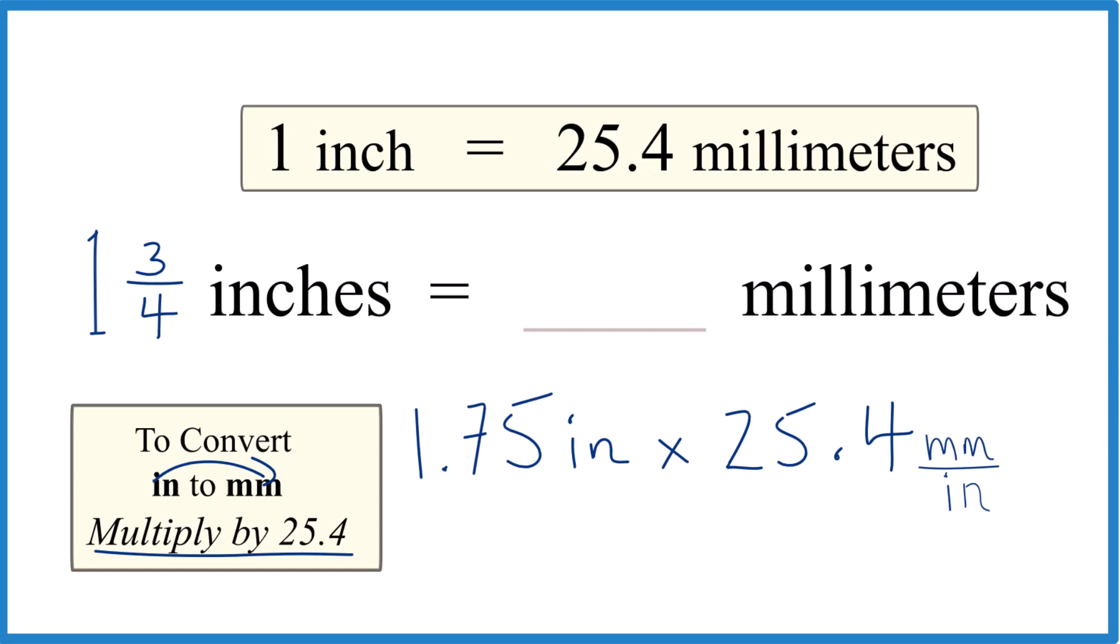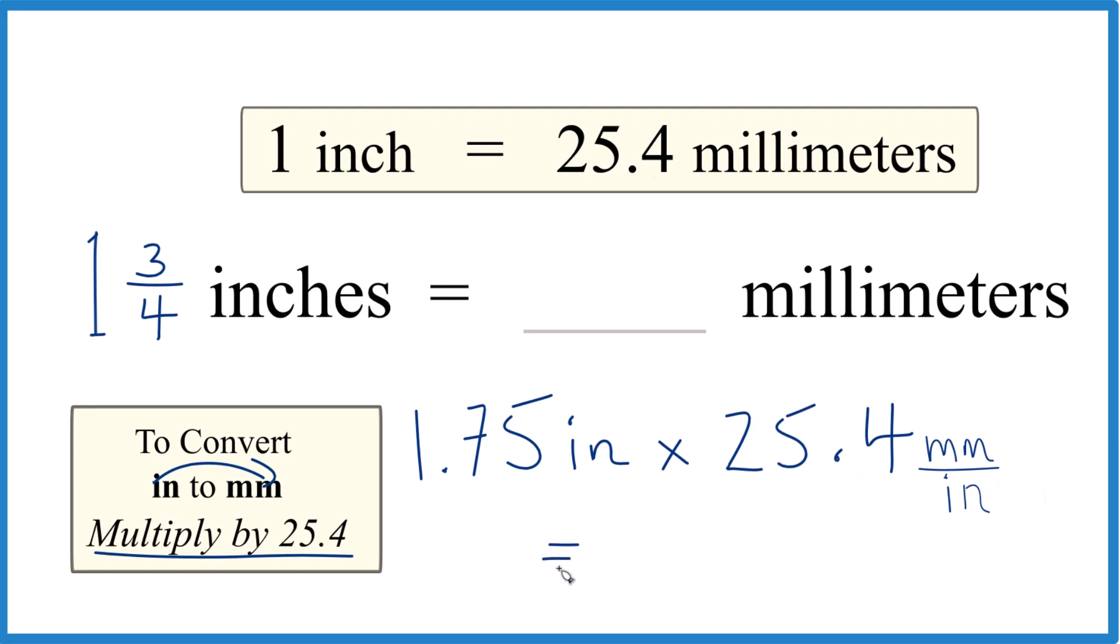So we're going to multiply 1.75 times 25.4, and we end up with 44.45. I'm going to round that to 44.5.